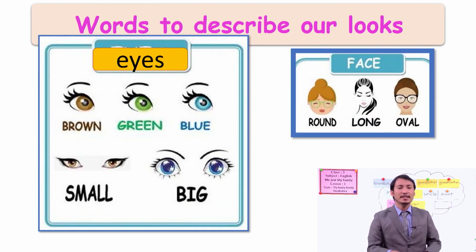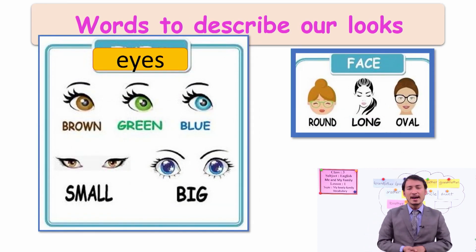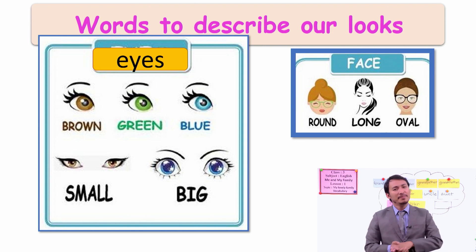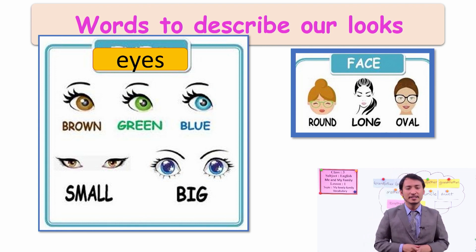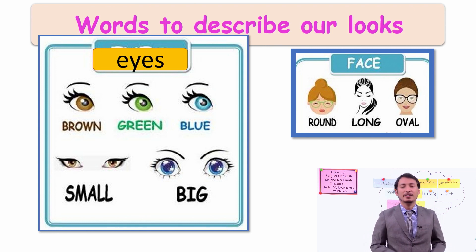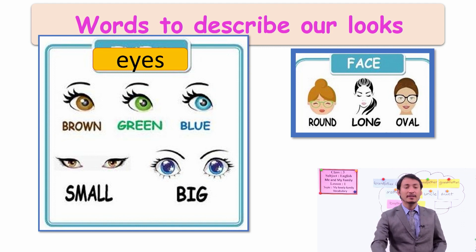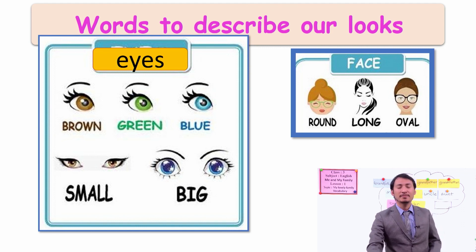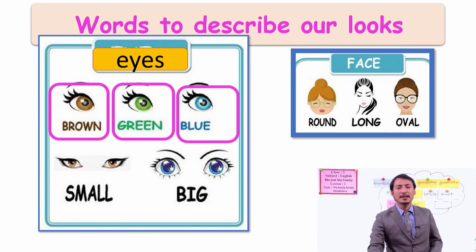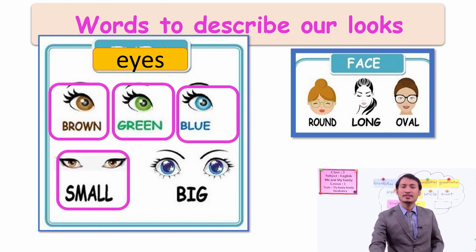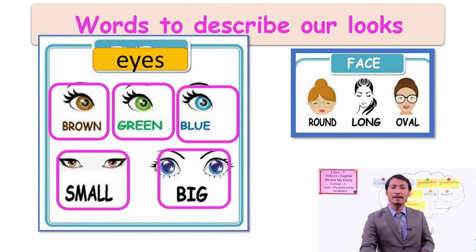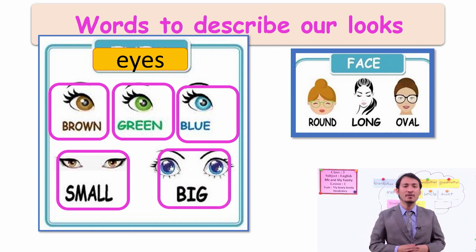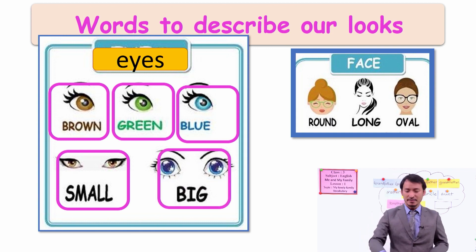Now let's look from the eyes. Some people have different kinds of eyes. You can have different colors of the eyes as well — some have brown eyes, some have green eyes, and blue eyes. Some people have small eyes, some people have big and wide, open eyes.